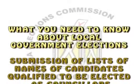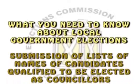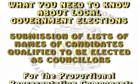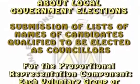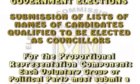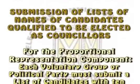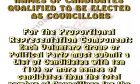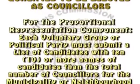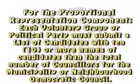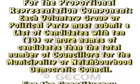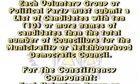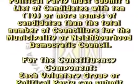What you need to know about local government elections: submission of lists of names of candidates qualified to be elected as councillors. For the proportional representation component, each voluntary group or political party must submit a list of candidates with 10 or more names than the total number of councillors for the municipality or neighborhood democratic council.